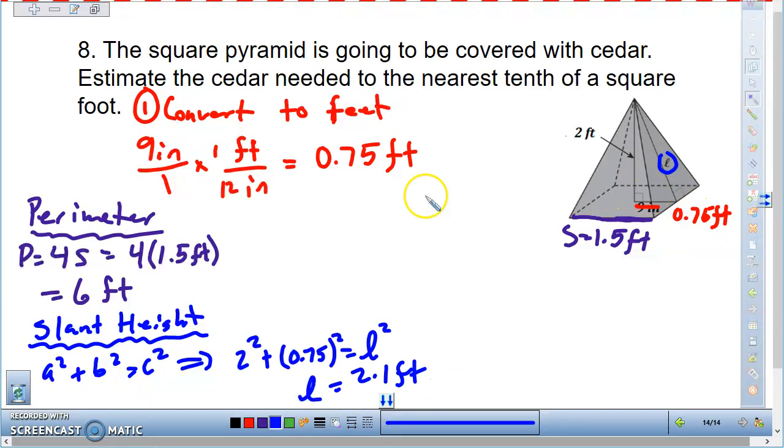So I have my perimeter, I have my slant height, and now all we have to do is plug it into our area formula. So the surface area of a square pyramid is one-half P times L plus the base, which ends up being one-half of 4s times L plus s squared.